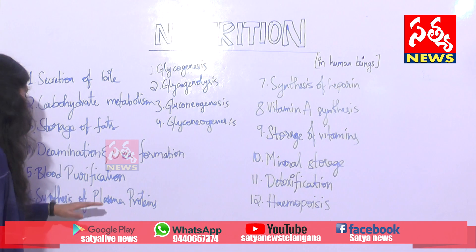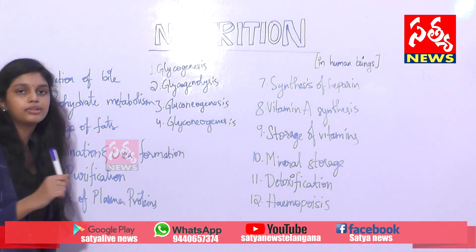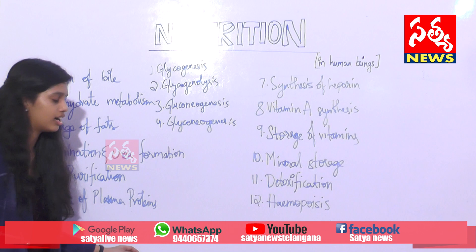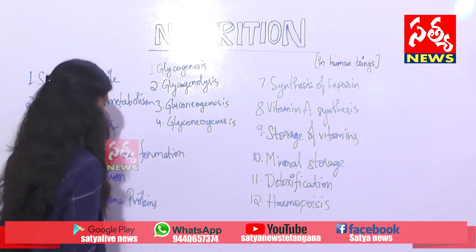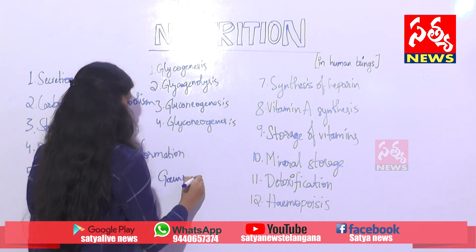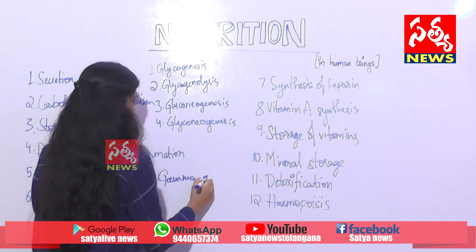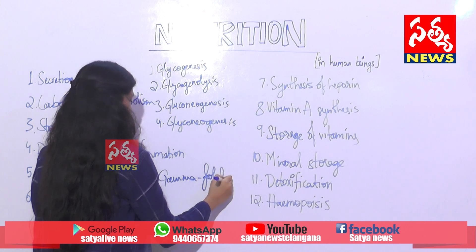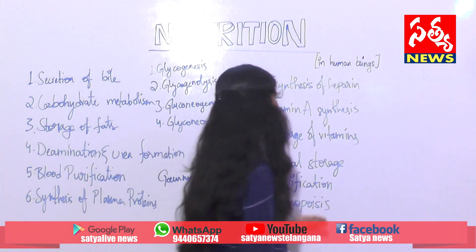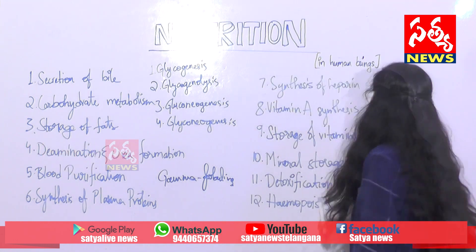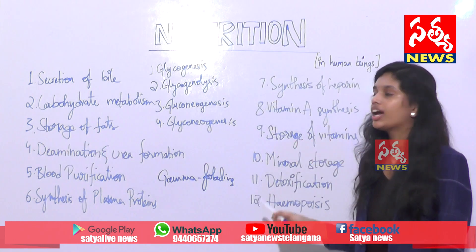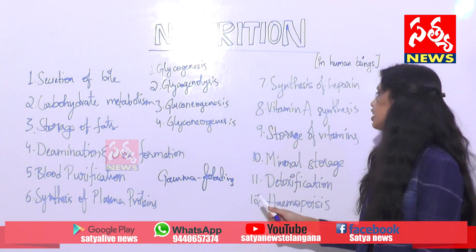Now, synthesis of plasma proteins: the liver synthesizes all types of proteins except the gamma globulins. Next, synthesis of heparin: heparin is a natural anticoagulant and it is synthesized by the liver.